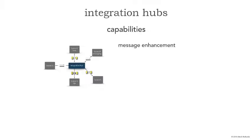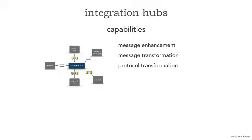Let's analyze the capabilities of the integration hub further. Message enhancement — changing the body of the message to enhance it, supplement information, or convert data — is one capability. Message transformation is another. The difference is that enhancement deals with the actual payload of the message, whereas transformation is involved with the format of the message. Then we have protocol transformation: the ability to go from one protocol, such as REST, over to another protocol such as AMQP, or even SOAP to ATMI. These are protocol transformations that the integration hub can do, further decoupling systems.